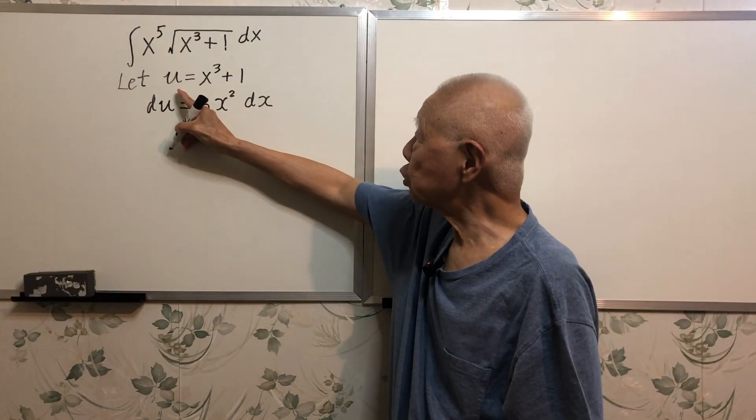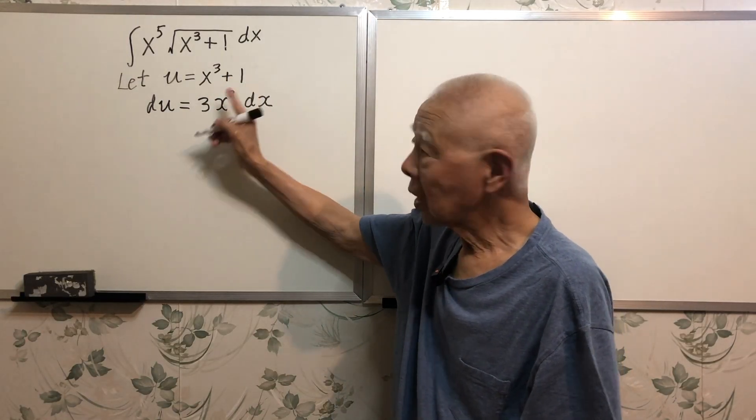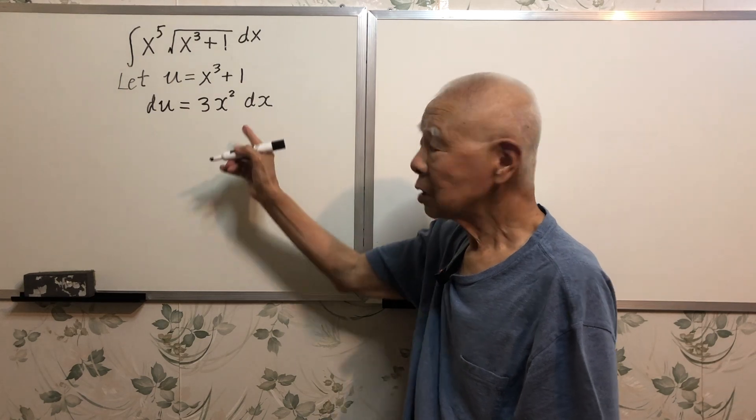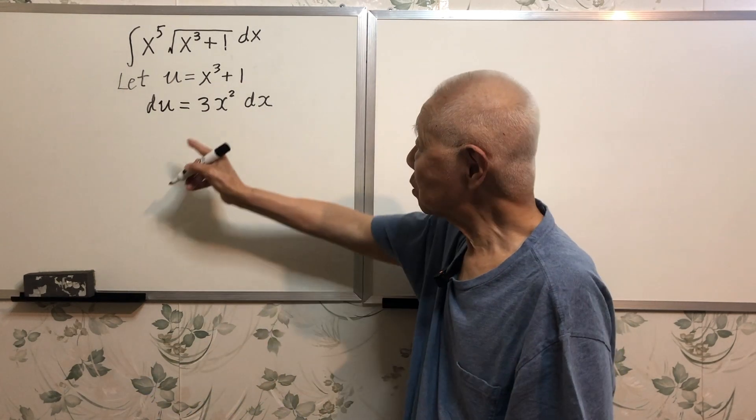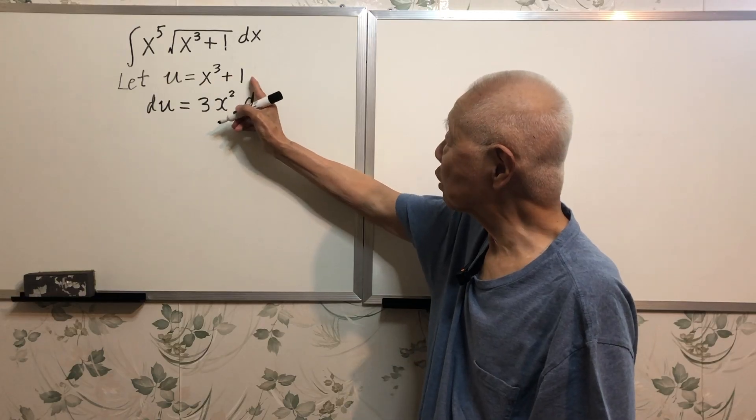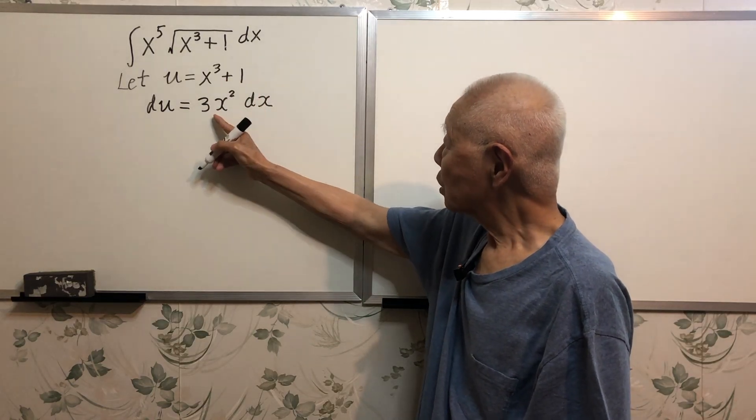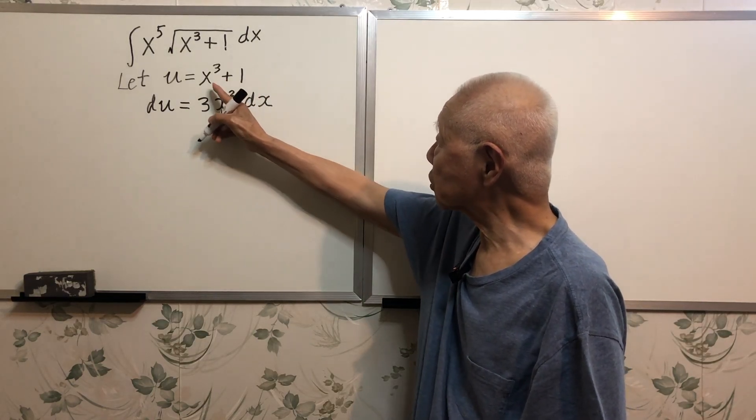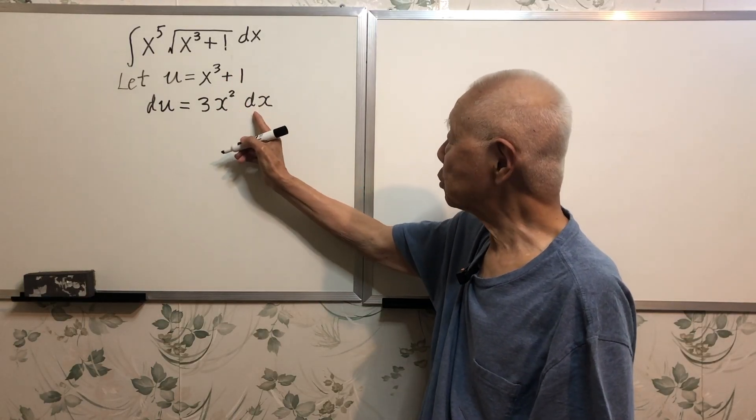Once I have u equals x cubed plus 1, I can do the differential. Remember the differential? So du is the derivative of this part multiplied by dx. 3x squared is just the derivative of the right-hand side times dx.